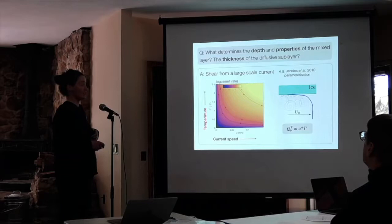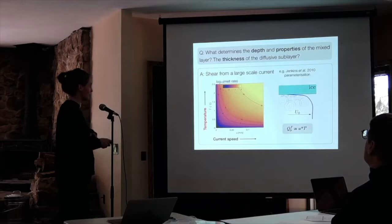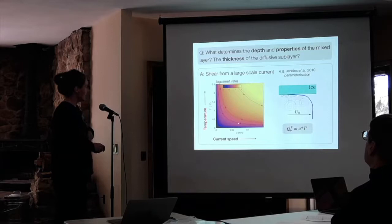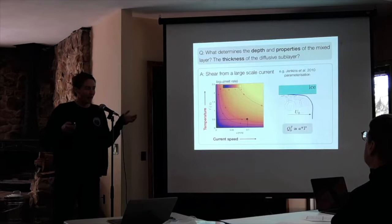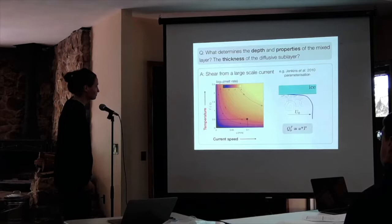This is the Edwin-Jakobsson parameterization — as a function of temperature and current speed, you get a melt rate. If we choose 10 centimeters per second and a thermal forcing of half a degree, we get a melt rate that's maybe a bit above 10 meters per year. How does this compare to observations? We're at a pretty cool time — there's more than one observation of in-situ basal melting and ocean conditions; we're sort of close to 10 such observations, which is really exciting.